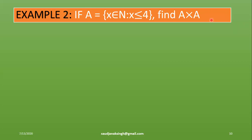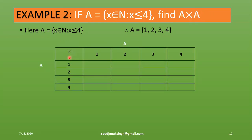Now let us check another example. If A equals the set of x such that x is a natural number less than or equal to 4, find A cross A. Here both sets are the same. The elements of set A are 1, 2, 3, and 4. We find A cross A using the table, with elements of A on the left side and the same elements across the top.